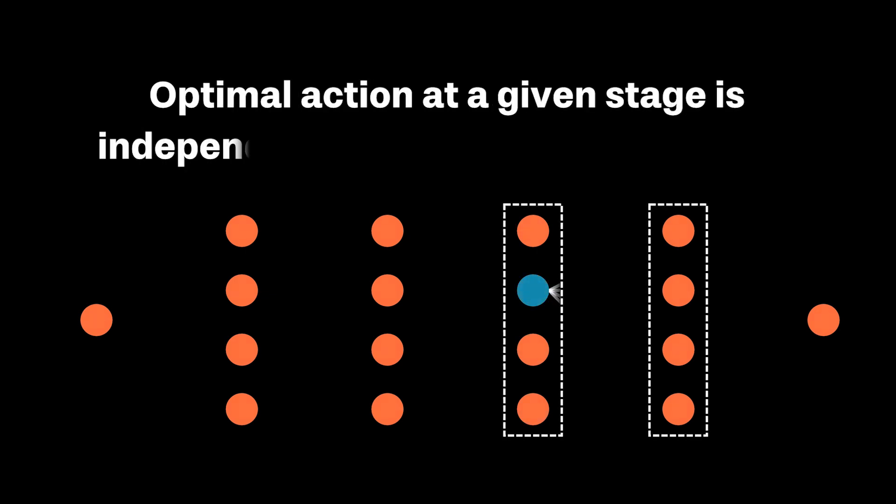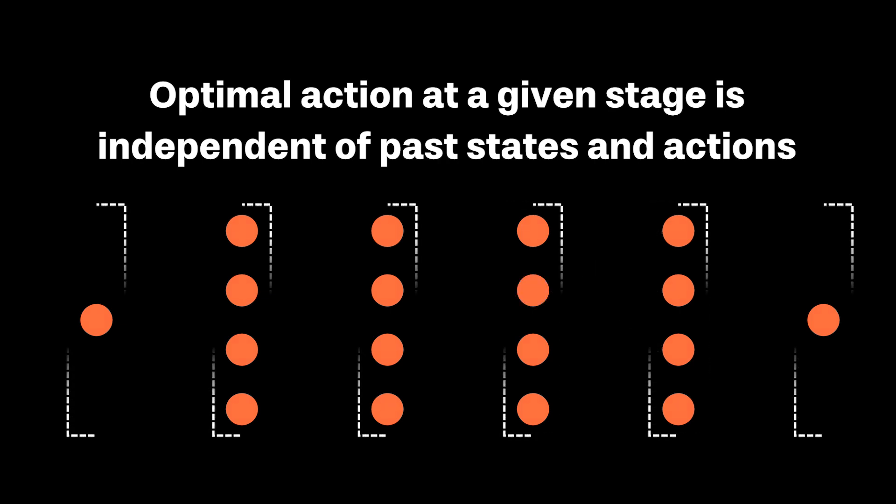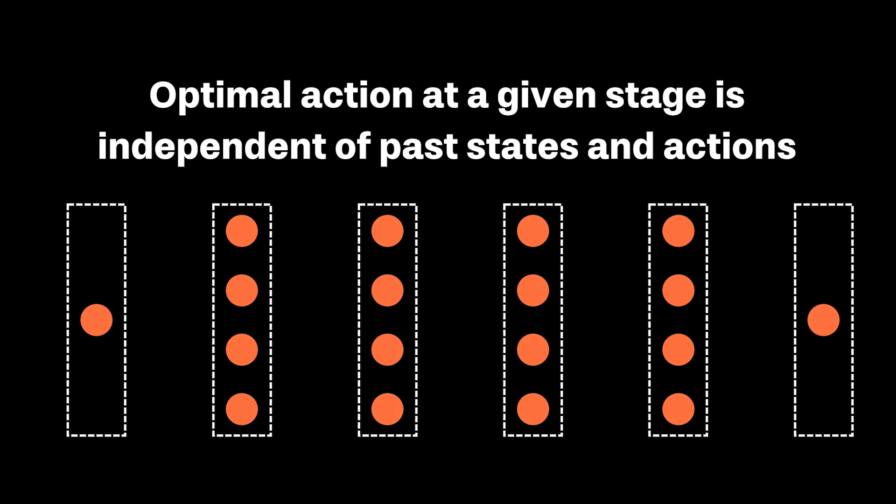And note here, bear with me for the next two minutes, as when we actually solve our problem, things will become far more clear. We know that the optimal decision at a given stage is independent of past stages. To know the best course of action at a given stage, we simply need to focus our attention on the future. So let's take this problem and break it down into bite-sized chunks, and these bite-sized chunks will be our stages.